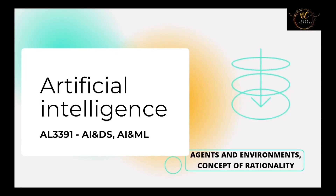Hi guys, welcome to Virtual Classroom. This is Artificial Intelligence AL3391, AADS and AML common paper. I hope you learned the last topic, Artificial Intelligence Introduction. Now we are going to see the next two topics of the unit: Agent and its Environment, and Concept of Rationality.